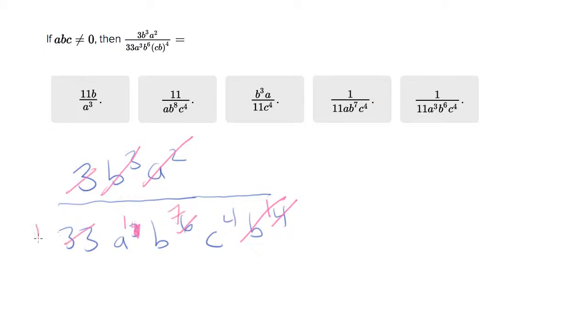Now 3 and 33 becomes 1 and 11. So all this cancelling gets me to 1 over 11 a to the 1, which is just a, b to the 7, c to the 4th, which is the 4th answer choice. Good to see that on the list.